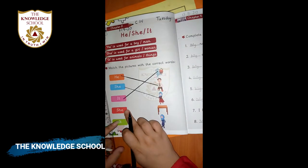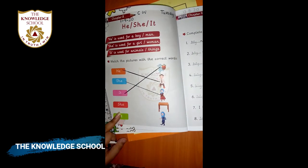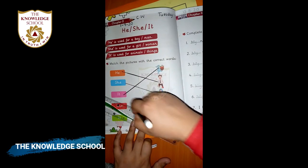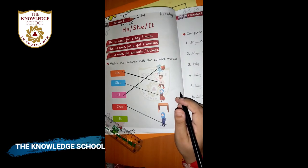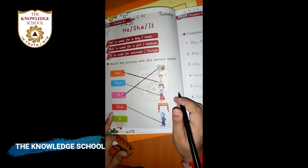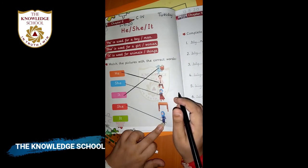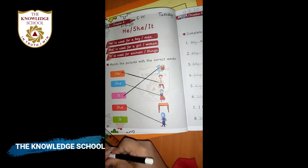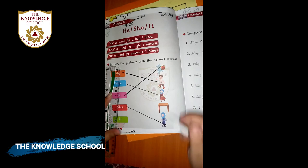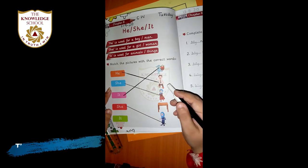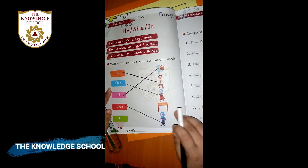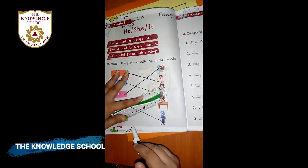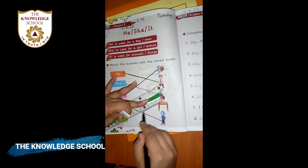Next one: she — again, she is used for a girl or woman, so you can join it with the woman — she is a woman. And it: it is used for animals or things, so table is a thing — you can join it with the table — it is a table.